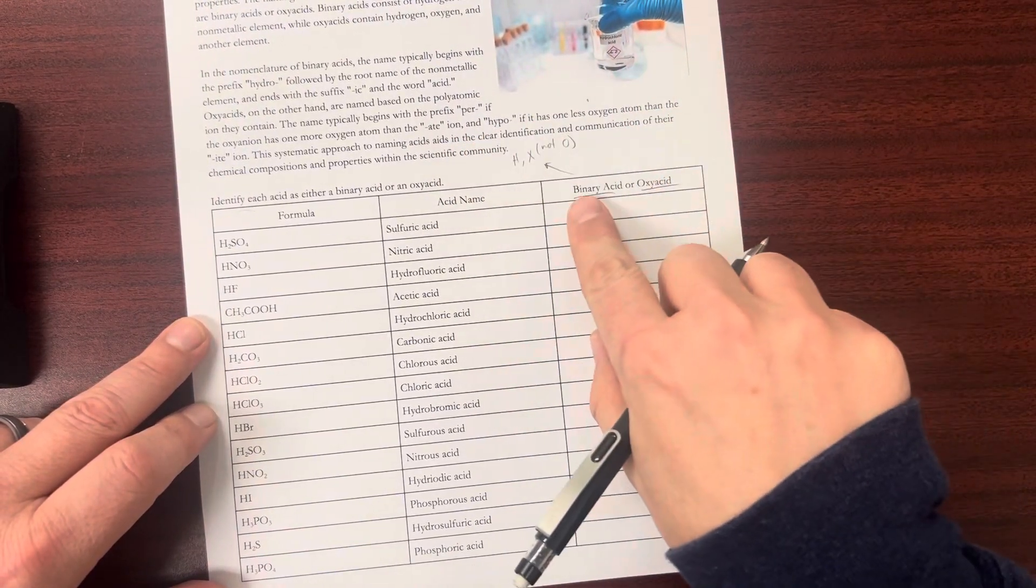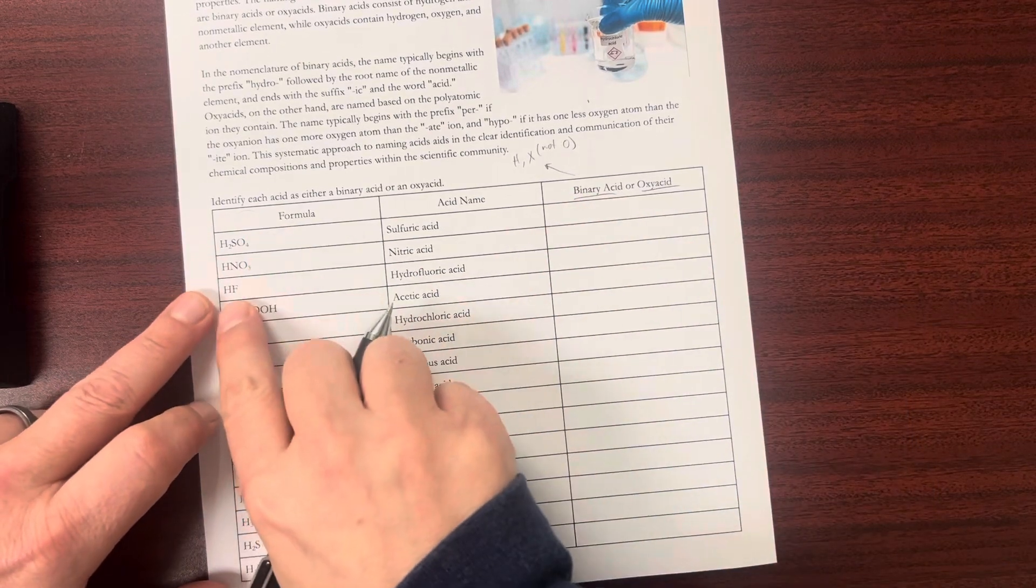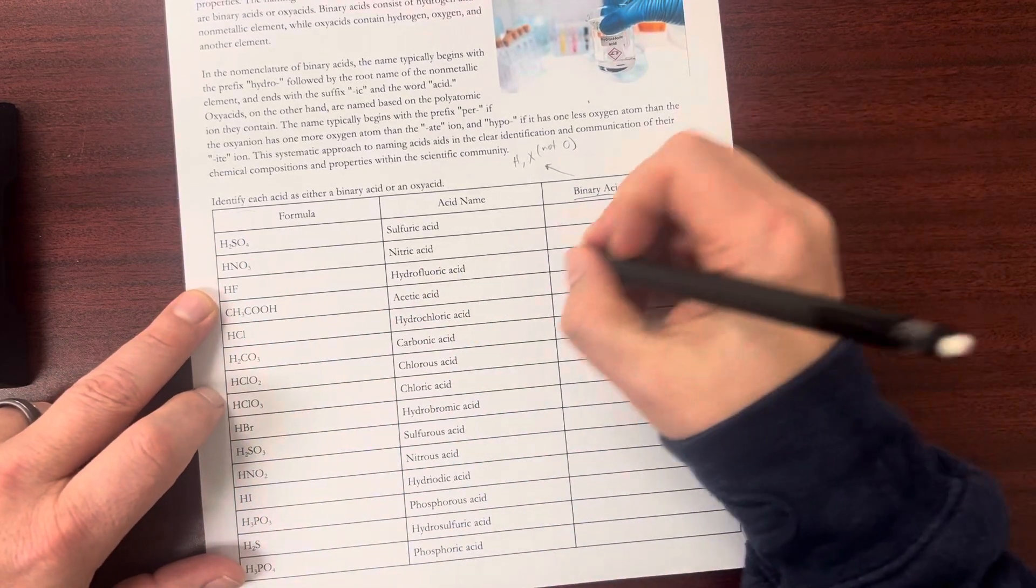See, bi means two. An example here, HF is binary.